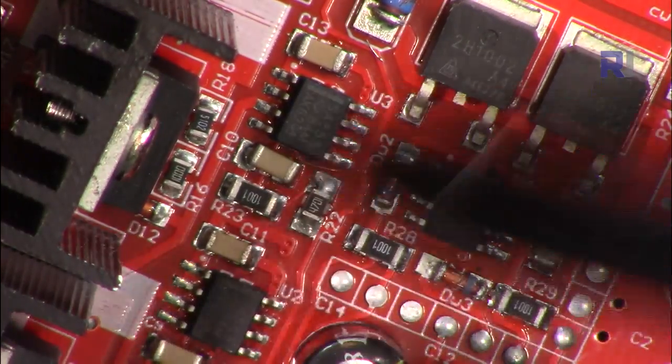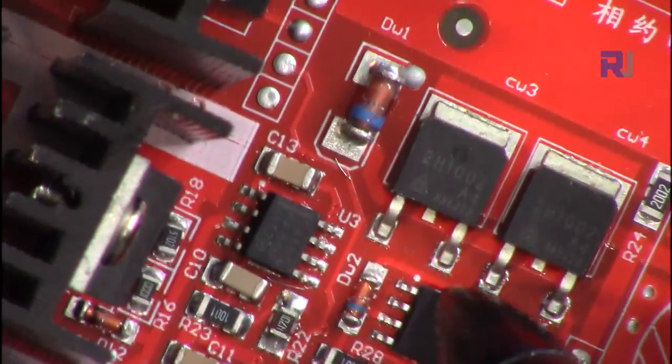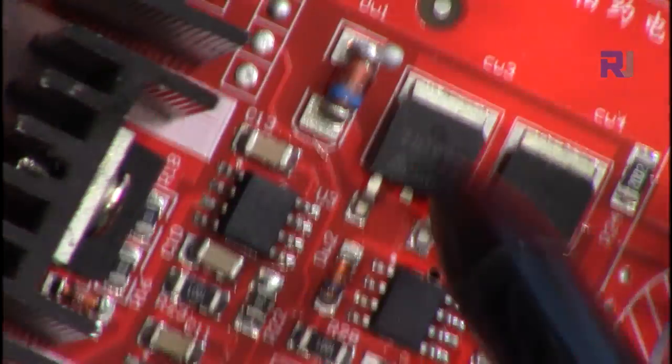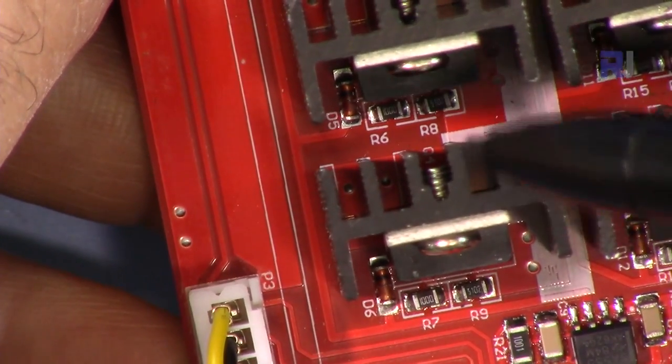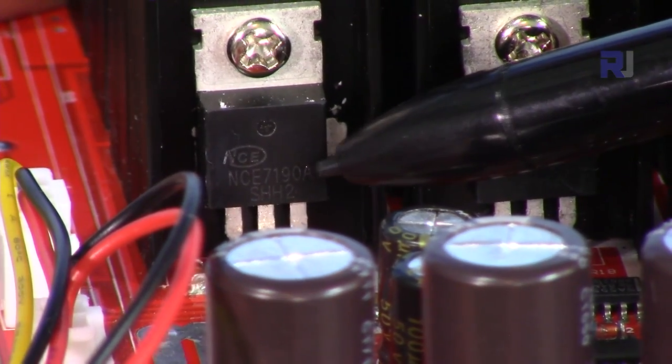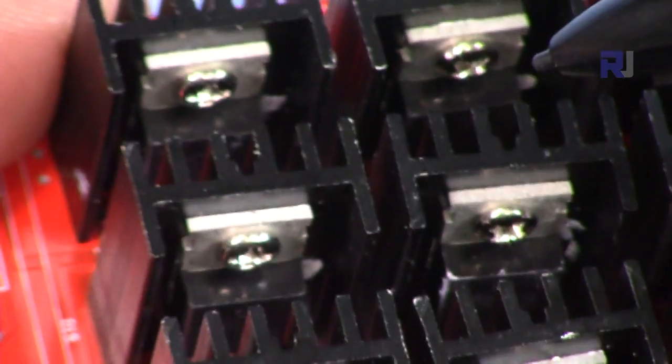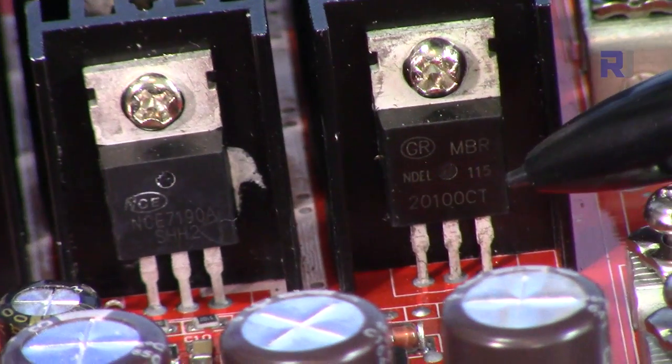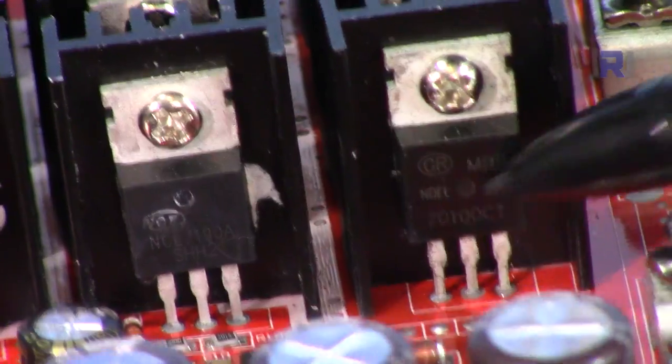At the heart of this is 555 timer IC so the pulse width modulation is being produced by these. This potentiometer changes the resistance to generate PWM. There is another chip that I've rubbed so we cannot read what it is. Each MOSFET has been biased separately, they have their own resistors for the gate. All of them NCE 7190, eight MOSFETs. And here is the 20100 CT, this pair of Schottky diodes.